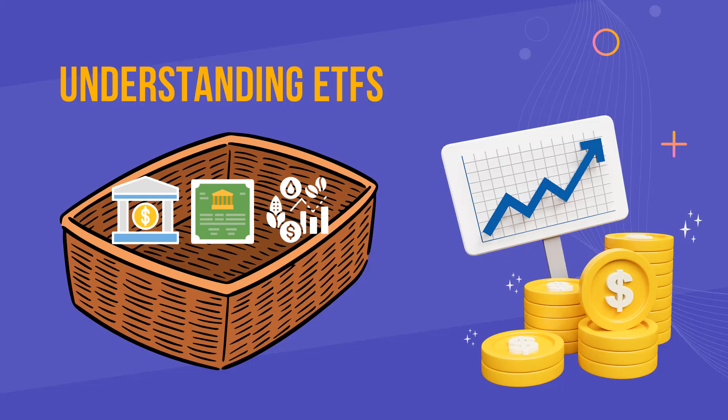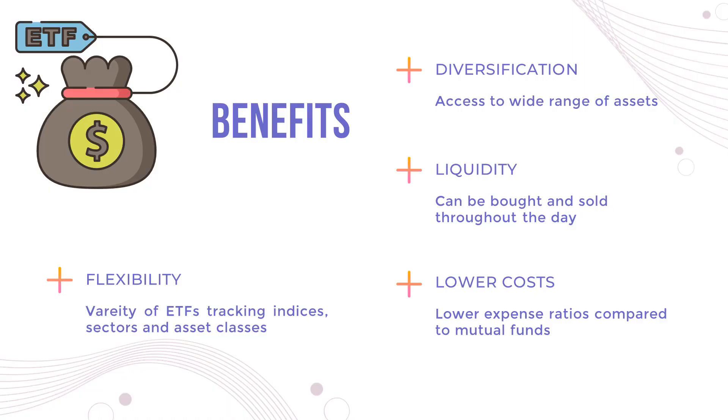So how does an ETF work? Imagine a basket. This basket holds a variety of assets such as stocks, bonds, or commodities. When you buy a share of an ETF, you are essentially buying a piece of this basket. This gives you exposure to all the assets in the basket, allowing you to diversify so that you are not putting all your eggs in one basket.